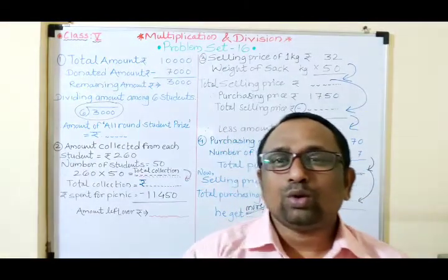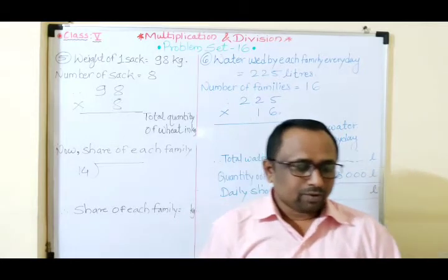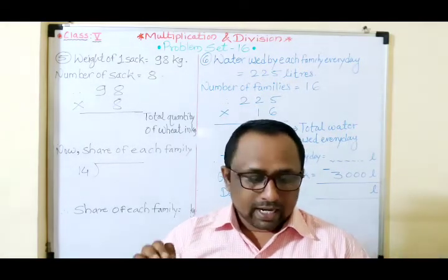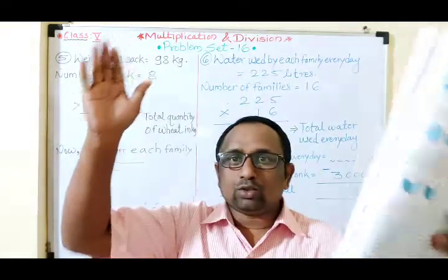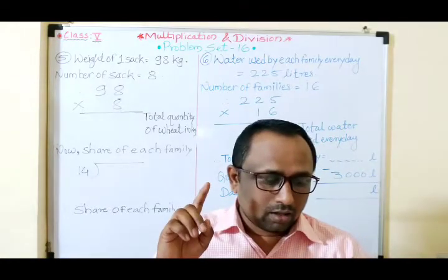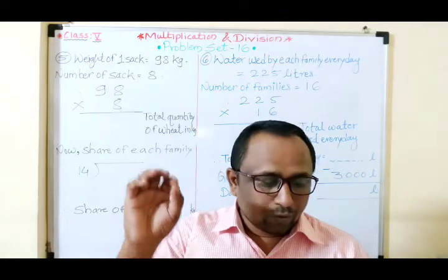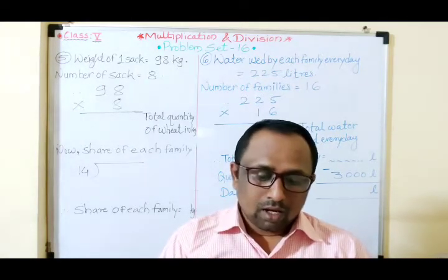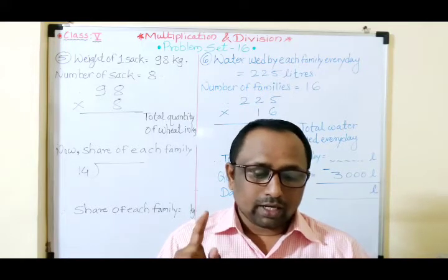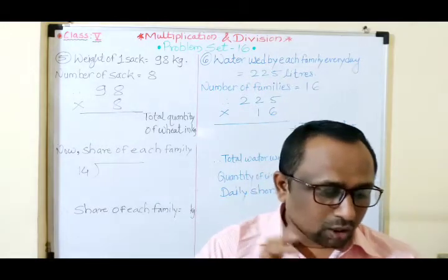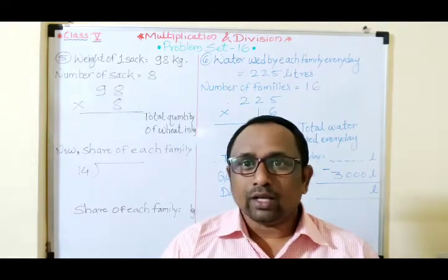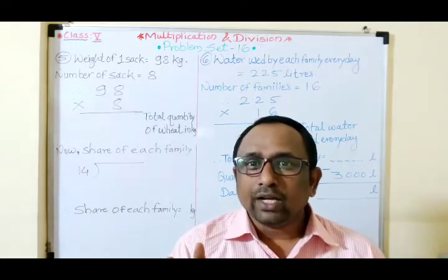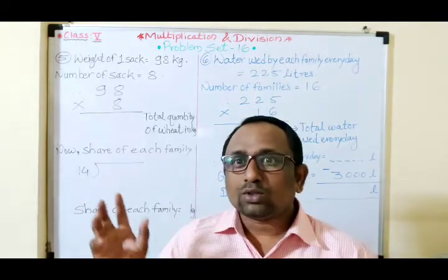Now the fifth example. Fourteen families in a society together bought eight sacks of wheat, each sack weighing 98 kilograms. There is a society apartment with 14 families living in it, and they bought eight sacks of wheat together. If they share all the wheat equally among the 14 families, what is the share of each family — how much weight does each family get?